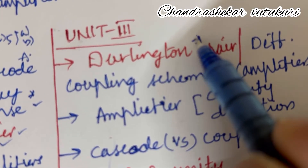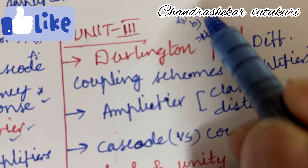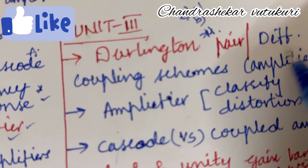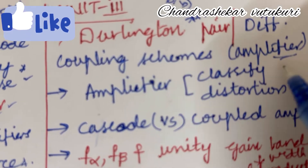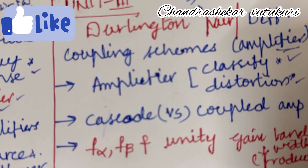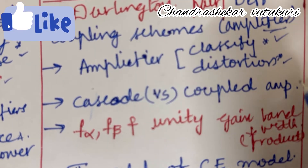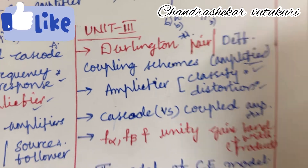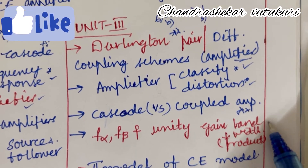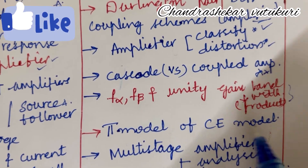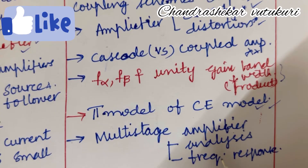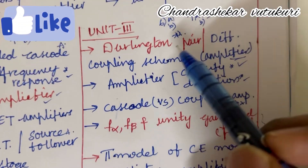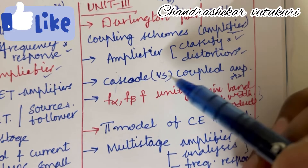Darlington pair is set as the topmost sure-shot question which may occur in 6AB. This is a combination of five topics — expect problems as well. Different coupling schemes and amplifiers are set as topmost questions. Amplifier classification and distortion may be the long question; amplifier distortion may be the short question. Cascode versus coupled amplifier differences may be the long question. F-alpha, F-beta, and unity gain bandwidth may occur in 7A and 7B, with bandwidth product as a short question. The pi model of a CE amplifier is set as the topmost question for 7B. Multi-stage amplifier analysis and frequency response may be long questions occurring in 6AB or 7AB, with short questions also asked.